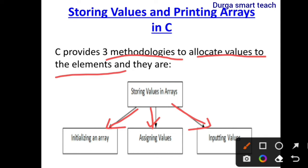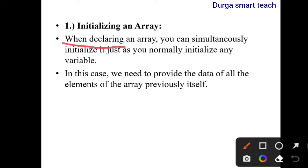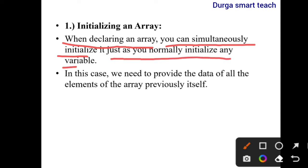Let's see one by one. First one is initializing an array. Initialization means giving values into the memory, or storing values into the memory. Declaration means allocating memory. When declaring an array, you can simultaneously initialize it, just as you normally initialize any variable.